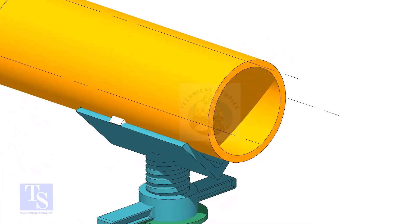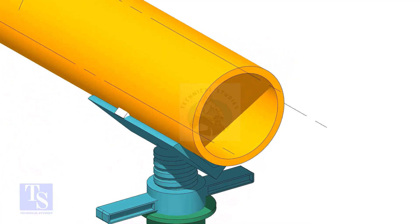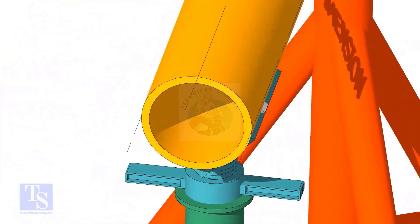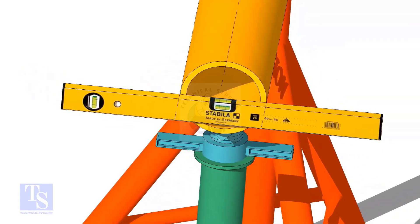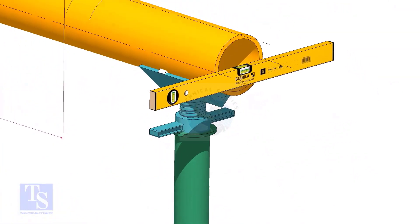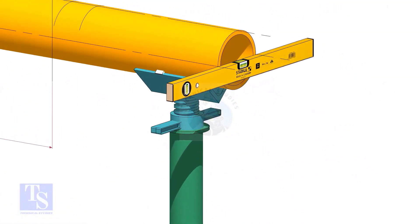After leveling the pipe, mark the center line and two quarter lines. Arrest the pipe, if required, make small tack welds.